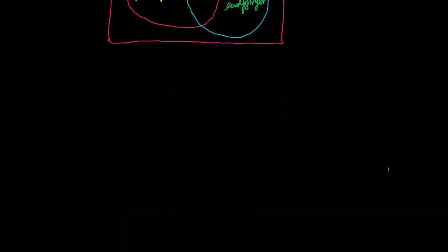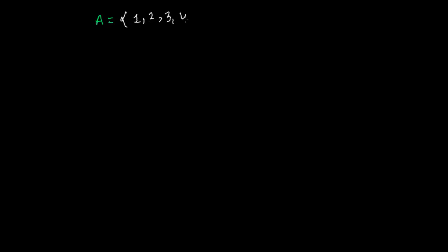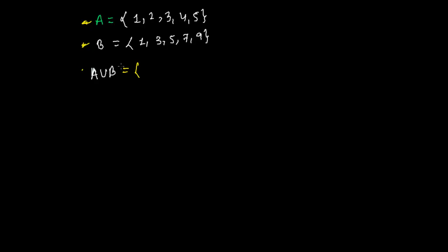Let's take one more example with numbers. Suppose A = {1, 2, 3, 4, 5} and B = {1, 3, 5, 7, 9}. For A union B, we write all elements of both sets without repeating. So A union B = {1, 2, 3, 4, 5, 7, 9}. Elements 1, 3, and 5 are already in A so we don't repeat them from B; we just add 7 and 9.